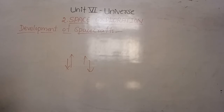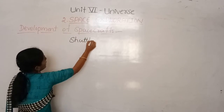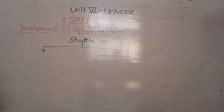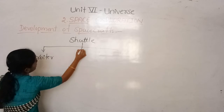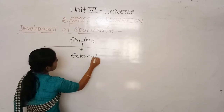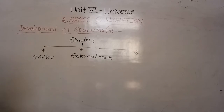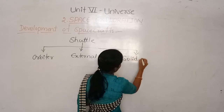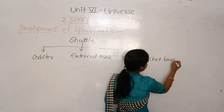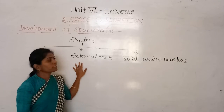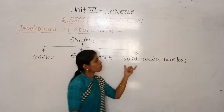A shuttle has three main parts: the first one is the orbiter, the second one is the external tank, and the third one is the solid rocket boosters.